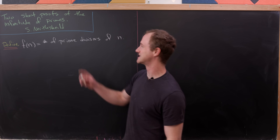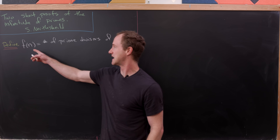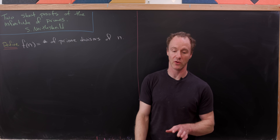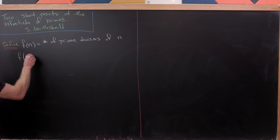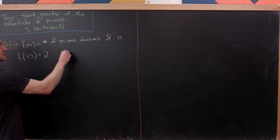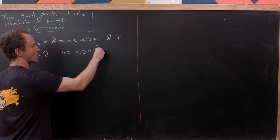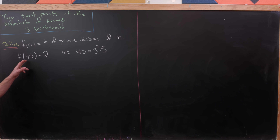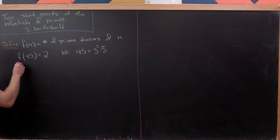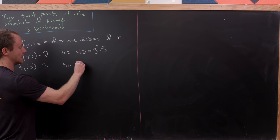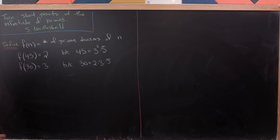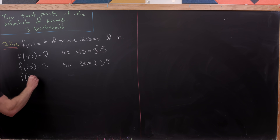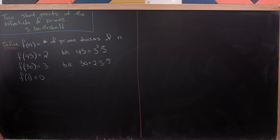For our first method, we'll consider a function f that takes a natural number n and gives you the number of distinct prime divisors of n. For example, f(45) = 2 because 45 = 3² × 5, so 3 and 5 are the only prime divisors. And f(30) = 3 because 30 = 2 × 3 × 5. Also, f(1) = 0 because no prime divides 1.